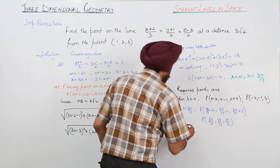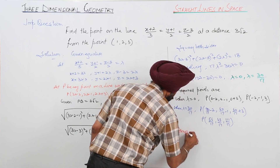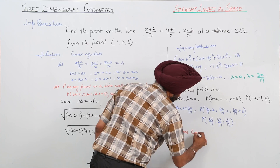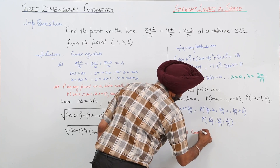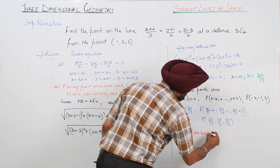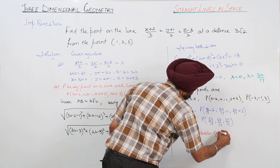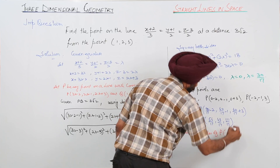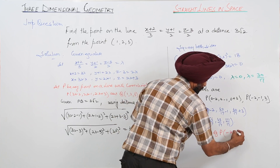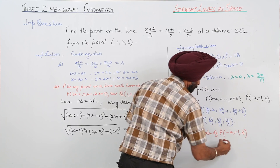Hence, the coordinates of P are (-2, -1, 3) or (56/17, 43/17, 111/17).